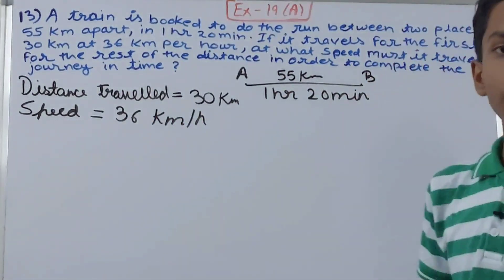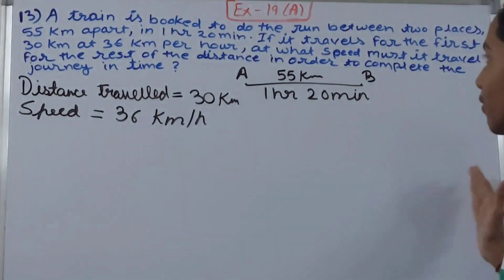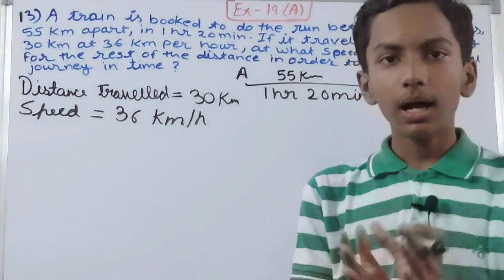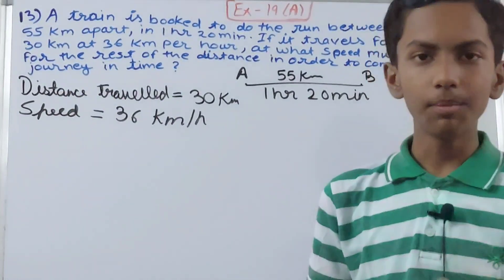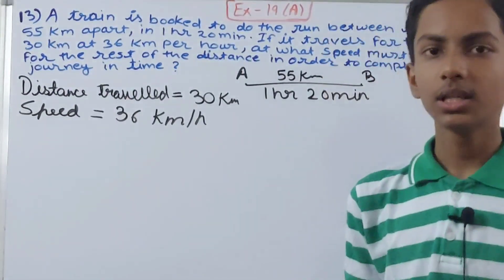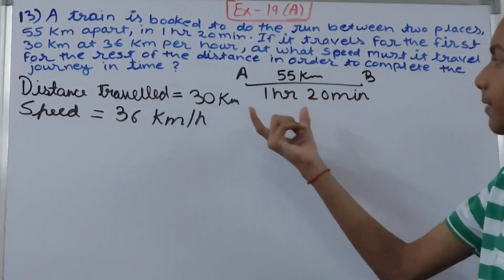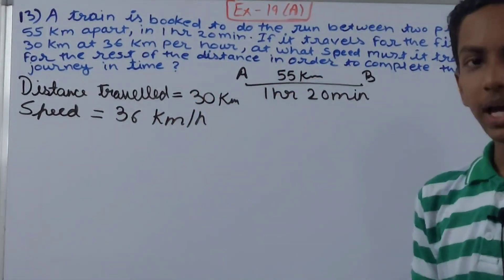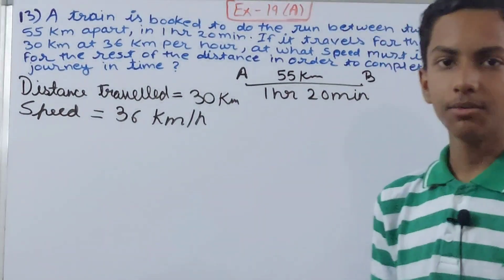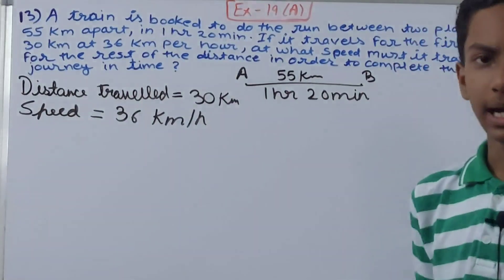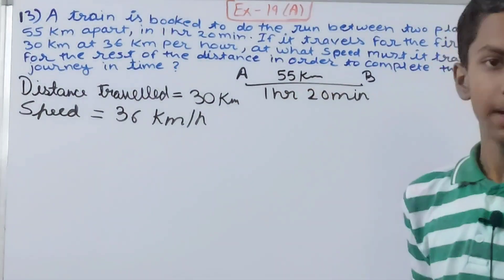We need to find the time taken to cover that first 30 kilometers, because out of the total 55 kilometers, 30 have already been covered and some time must also have been taken. We need to find that time to determine what remaining time is left.